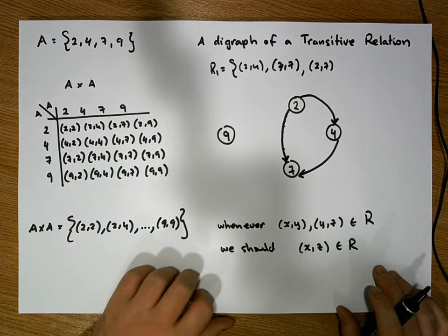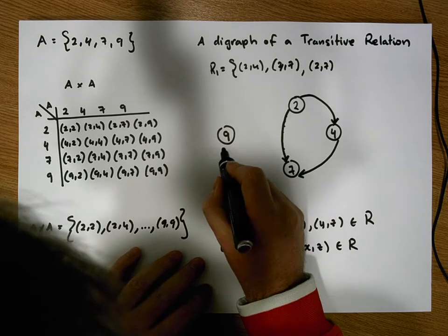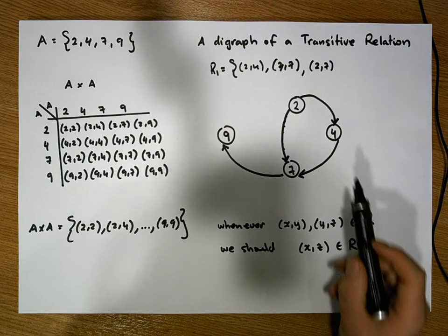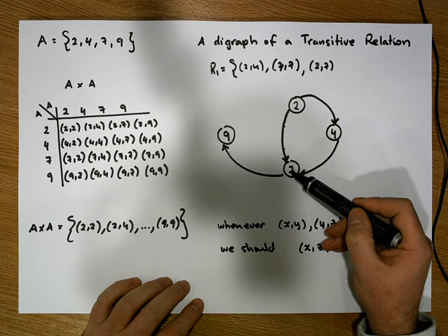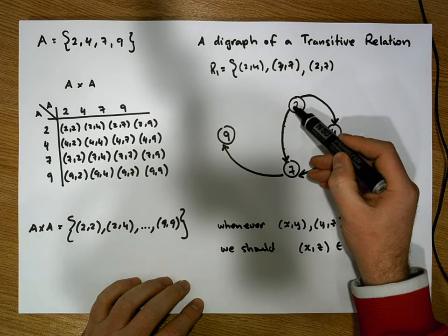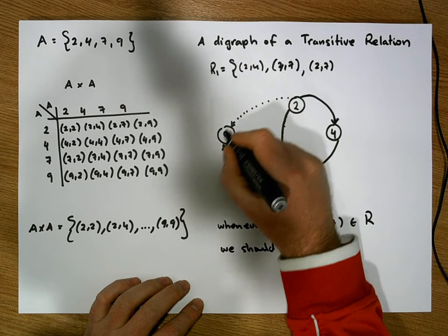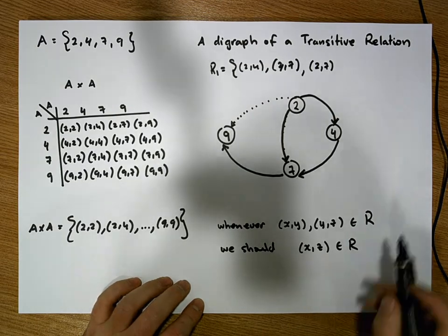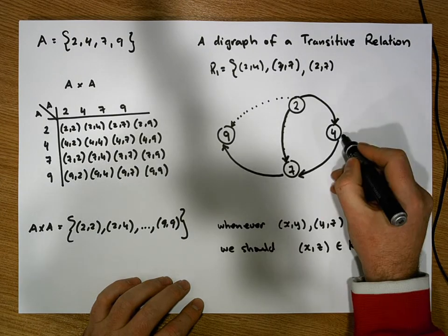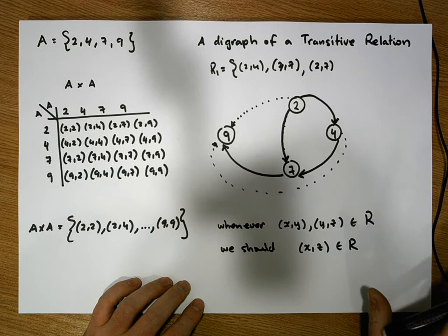We can continue to add hops. For example, let's go from 7 to 9. Now let's consider all the possible double hops. We can go from 2 to 7 and then from 7 to 9 — if transitive, we should be able to go directly from 2 to 9. We can also go from 4 to 7 and then from 7 to 9 — if transitive, we should be able to hop from 4 to 9. At this stage, neither of those direct edges exists yet.